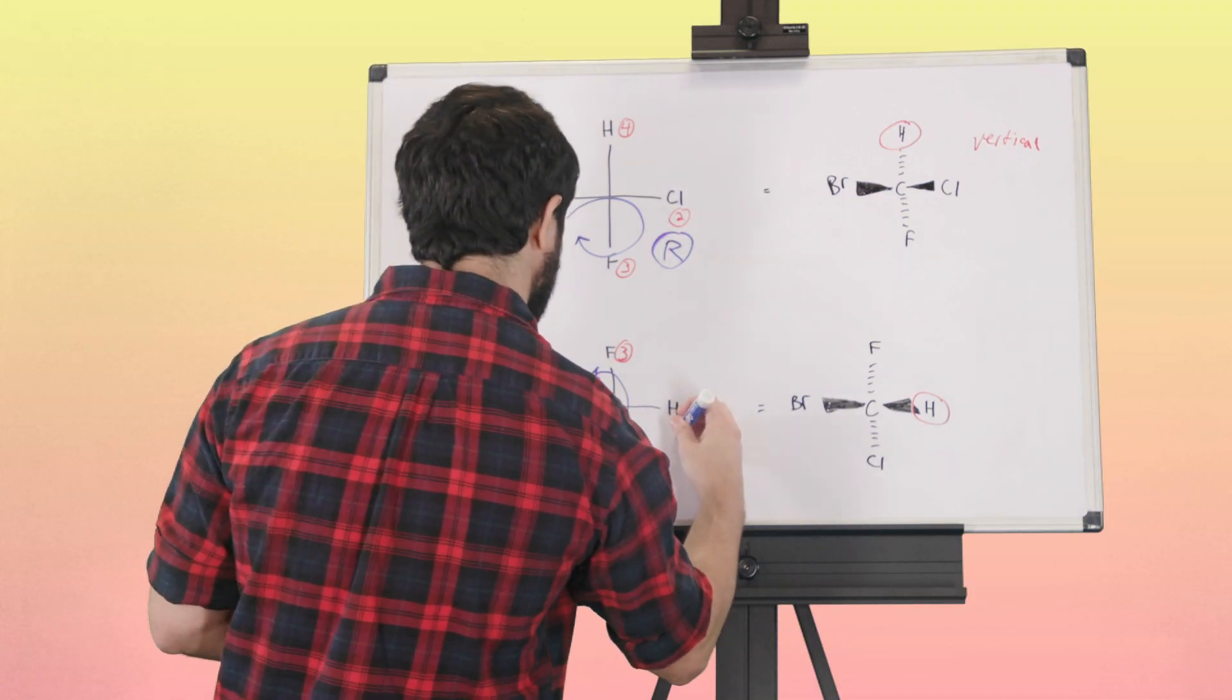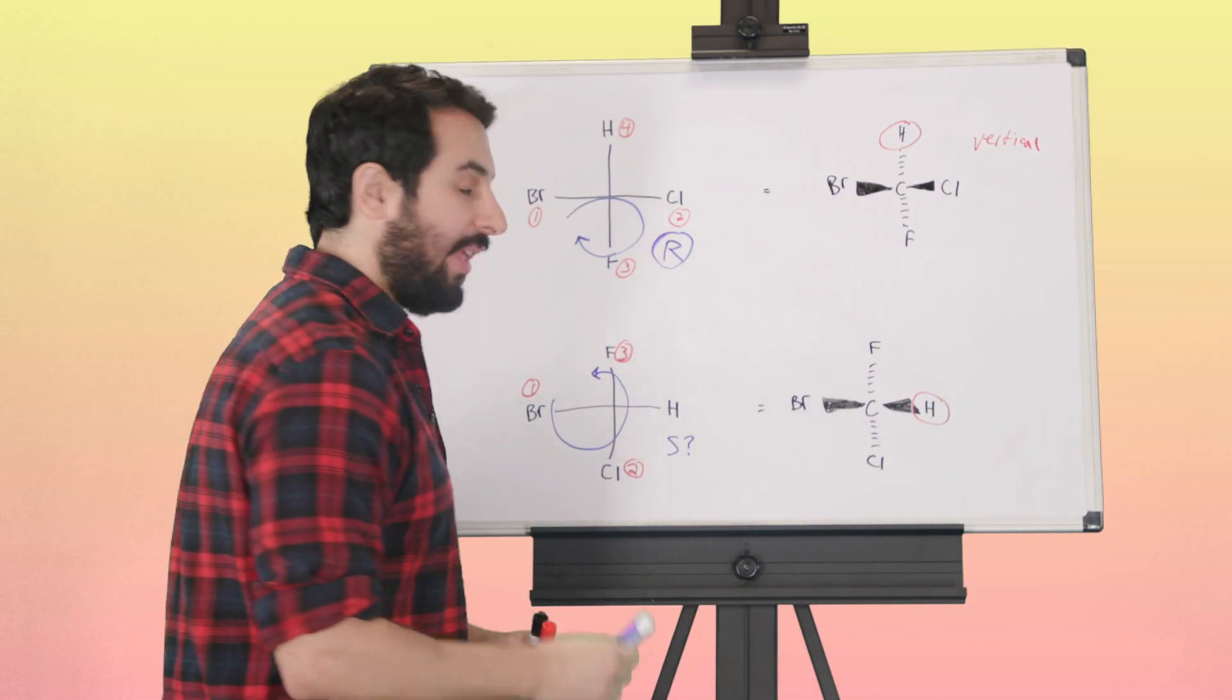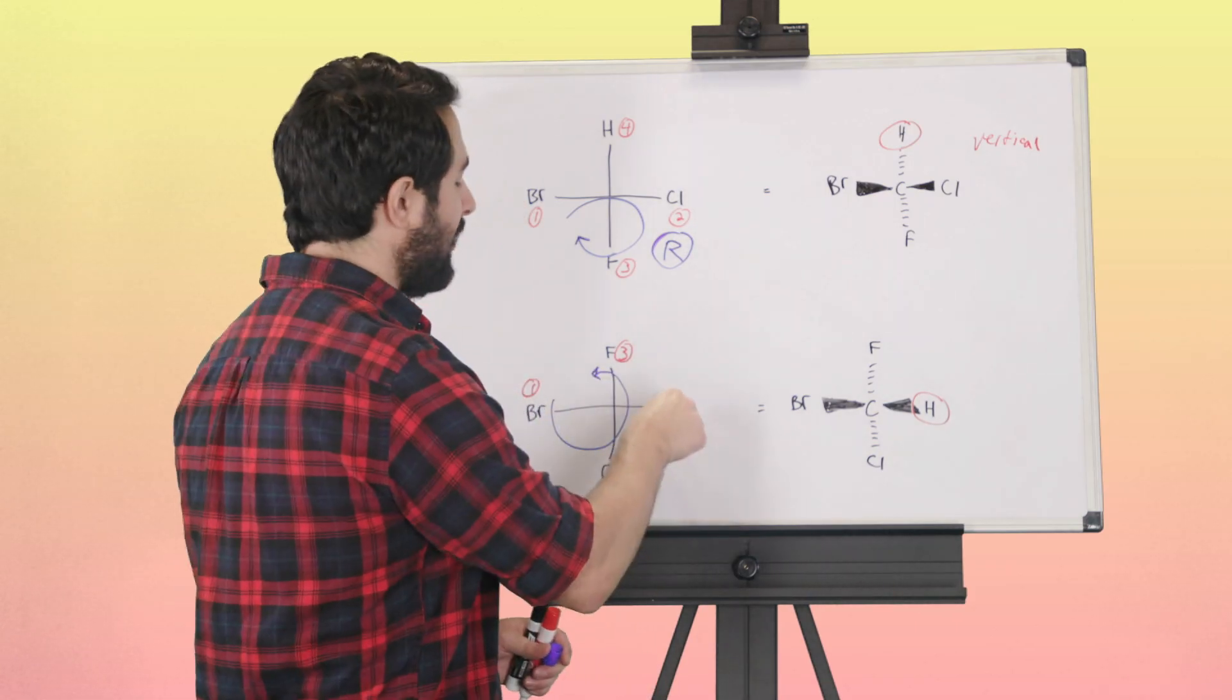Now let's just trace from one to two to three exactly as shown. We're going to go like that, so it looks like S.